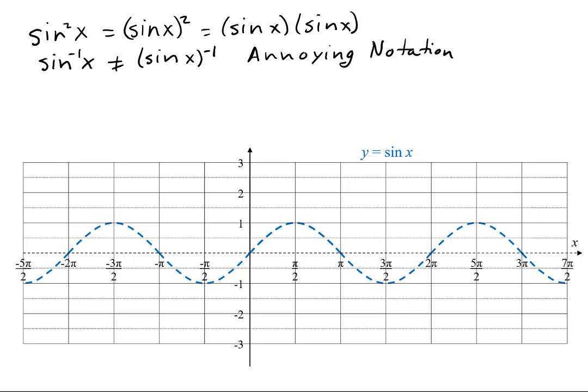This is annoying notation. When you put the negative 1 outside the parentheses, it means one over the sine, which is the cosecant. This is the reciprocal function.